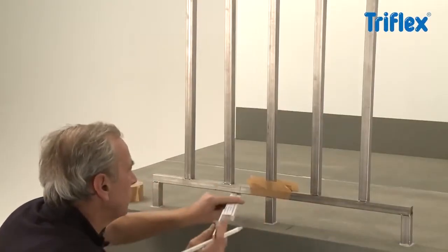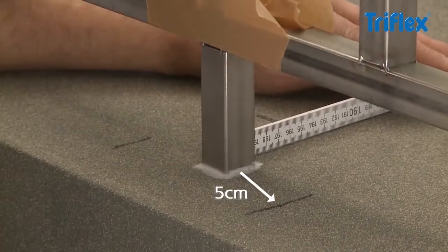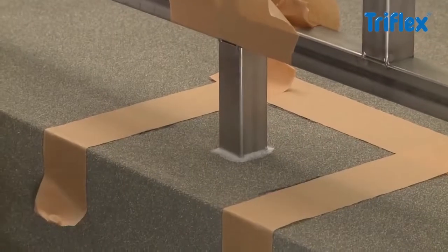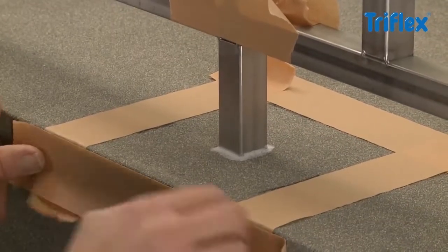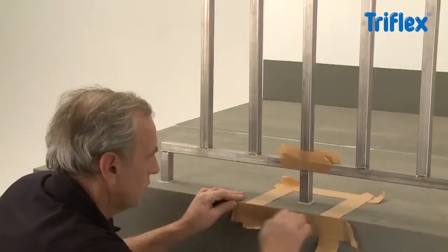If the surrounding area is also to be waterproofed with Triflex, the waterproofing fleece must extend at least 5 cm onto the horizontal surface. When joining to foreign materials, you need a minimum 10 cm overlap.